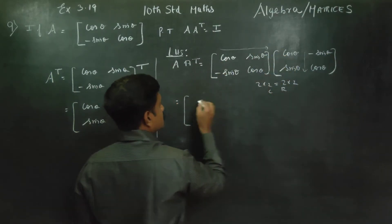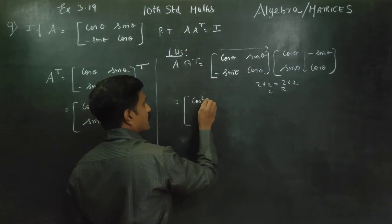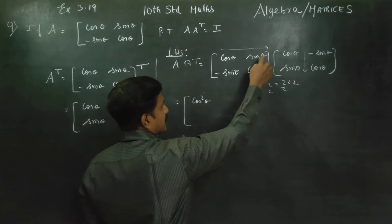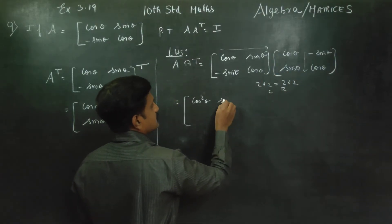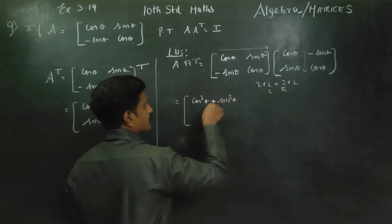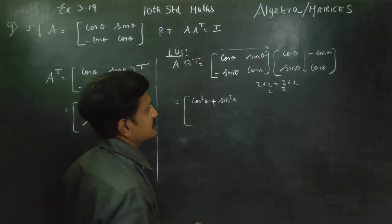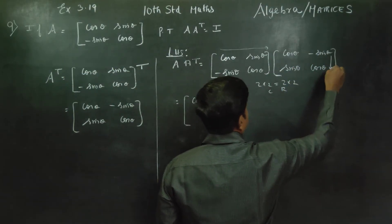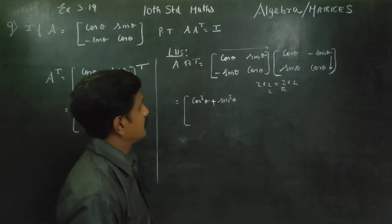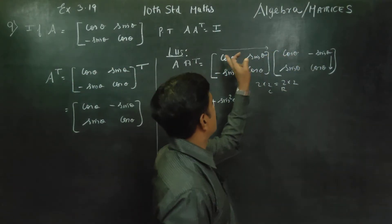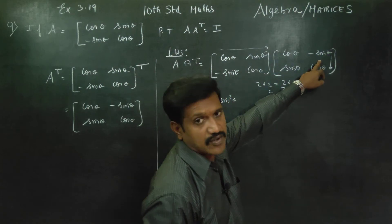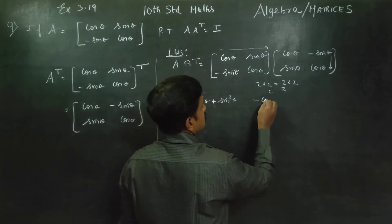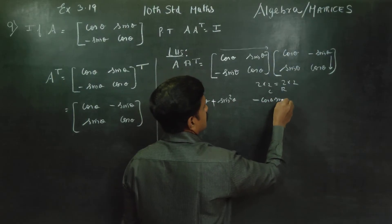For the first row, first column element: cos theta into cos theta gives cos square theta, plus sin theta into sin theta gives sin square theta. For the first row, second column element: cos theta into minus sin theta, then plus sin theta into cos theta — so cos theta sin theta minus cos theta sin theta.